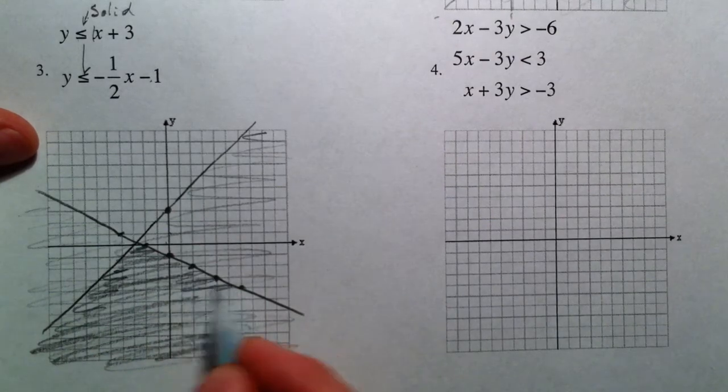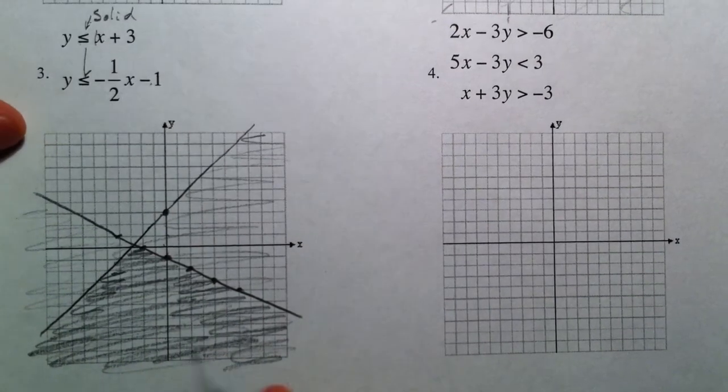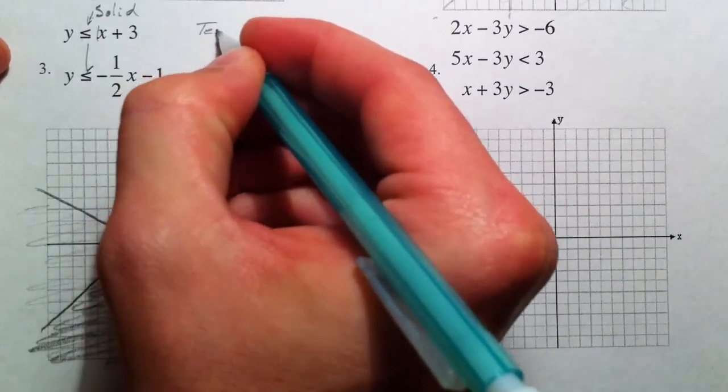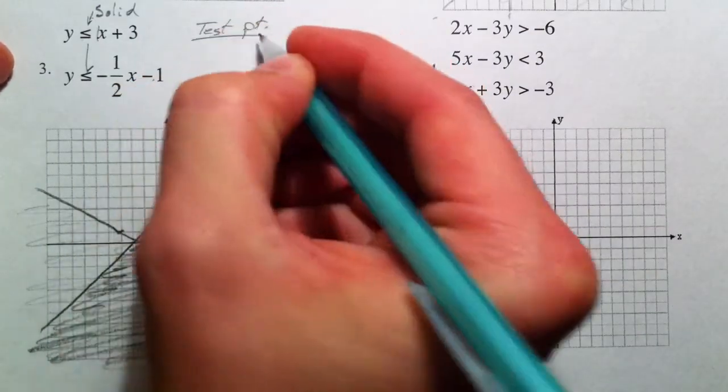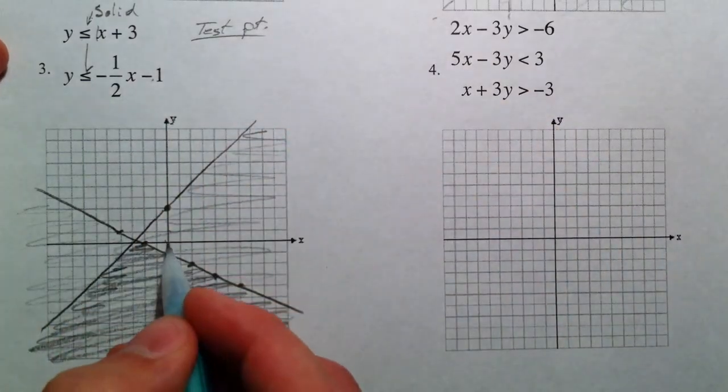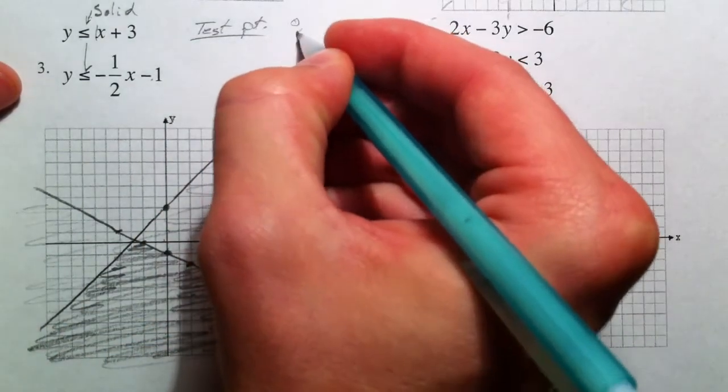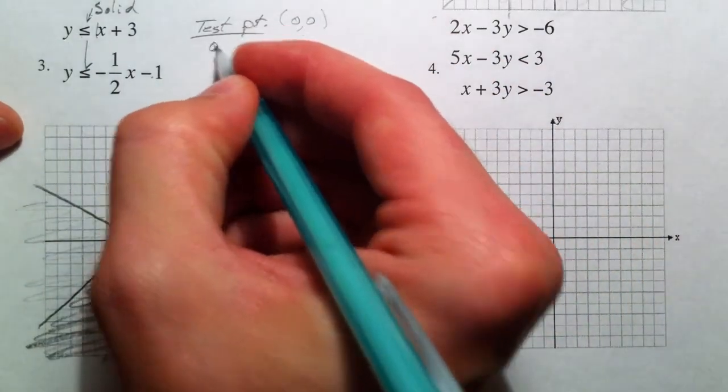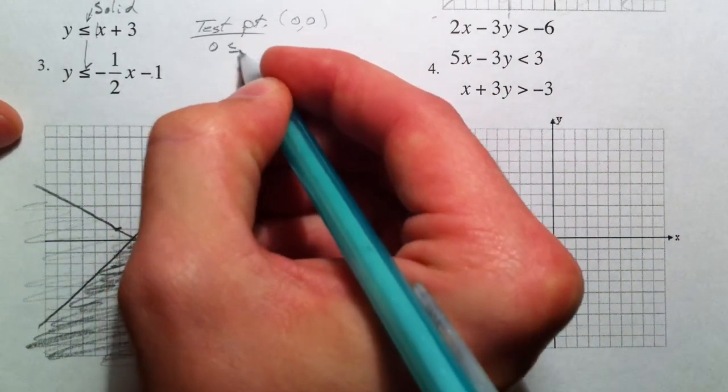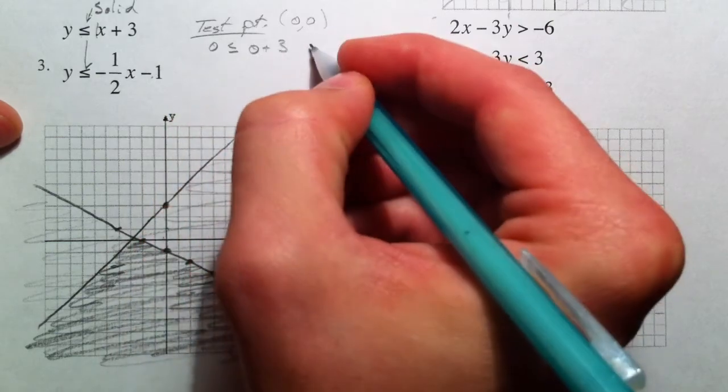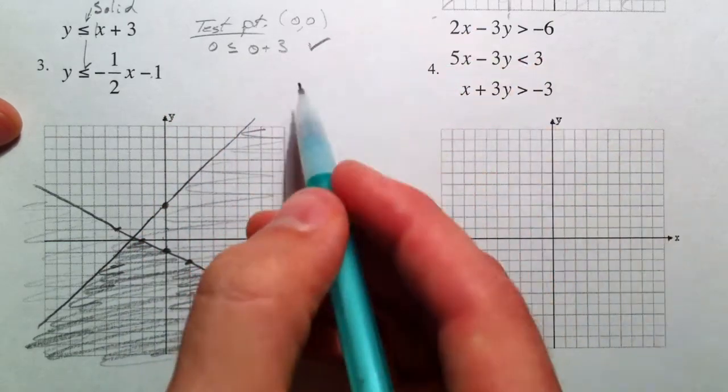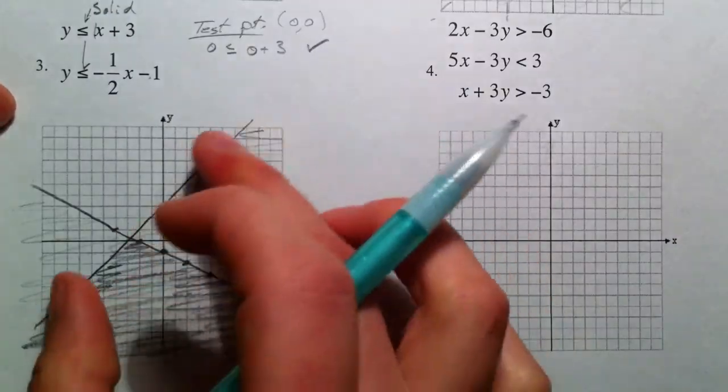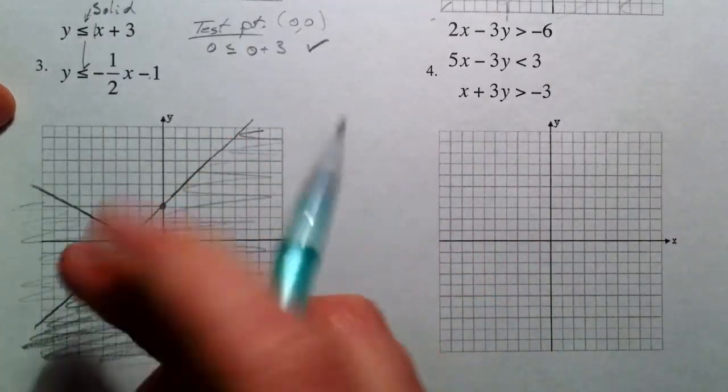Keep in mind that you can pick test points if you ever want to just double check. Test point. And you want to pick a test point that's not on the line. Say 0, 0. It's always the easiest one. And you can plug in 0 and see, okay, well, 0 is less than or equal to 0 plus 3. So that checks out. And so you want to shade towards the side of the line that has 0. So we shaded below that one because it had 0, 0.